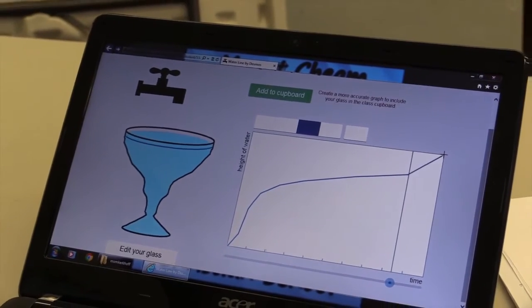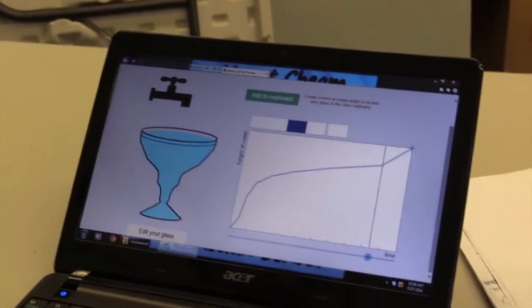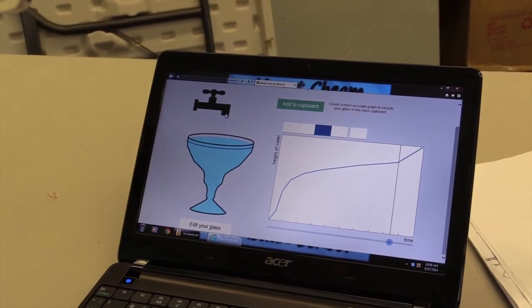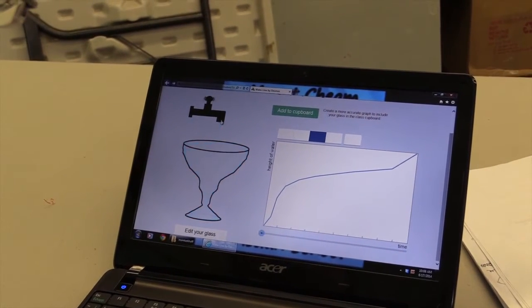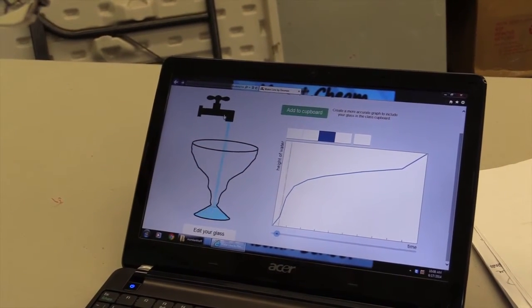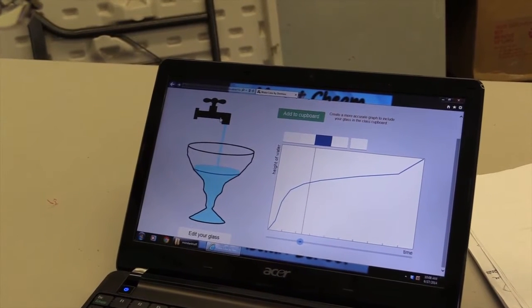Most students initially made a rough sketch with the pencil tool and then replayed the animation so that they could compare their graph with the actual water level. This gave them more feedback which helped them to revise their graph to better match the situation.